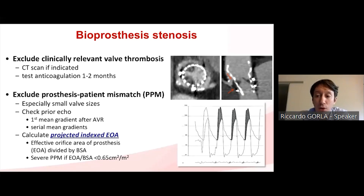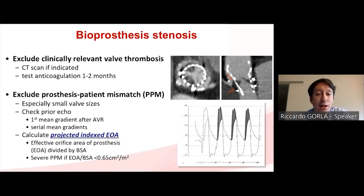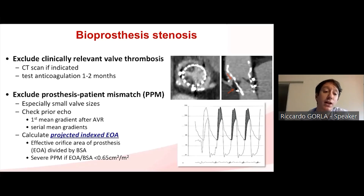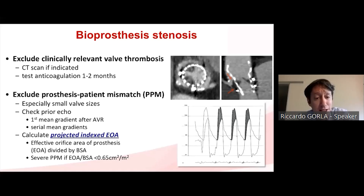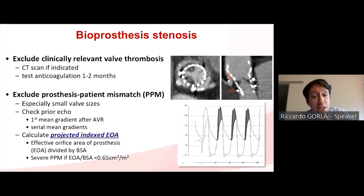You should follow up the evolution of aortic gradients over time to understand whether gradients were high from the beginning and further deteriorating, or if there is full deterioration of the valve over time. It's also important to calculate the projected indexed EOA — the ratio between EOA and body surface area — to diagnose severe patient-prosthesis mismatch.